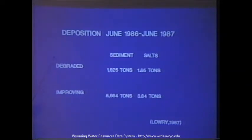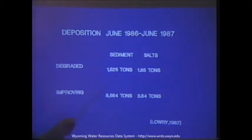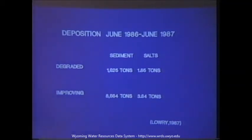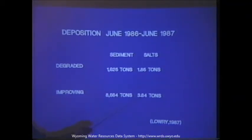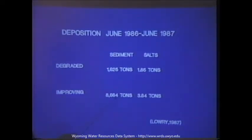Deposition values obtained between June 1986 and June 1987, corresponding primarily to the 1987 runoff, showed that the degraded stream unit trapped 1,625 tons of sediment and correspondingly 1.85 tons of soluble salts. The improving channel, despite having less than half the total salt concentration of the degraded channel, trapped 8,664 tons of sediment, and therefore trapped nearly twice the amount of soluble salts. However, it's not a linear relationship — even though it trapped six to seven times the amount of sediment, it trapped less than twice the amount of soluble salts. So salt retention is not directly related to sediment deposition.